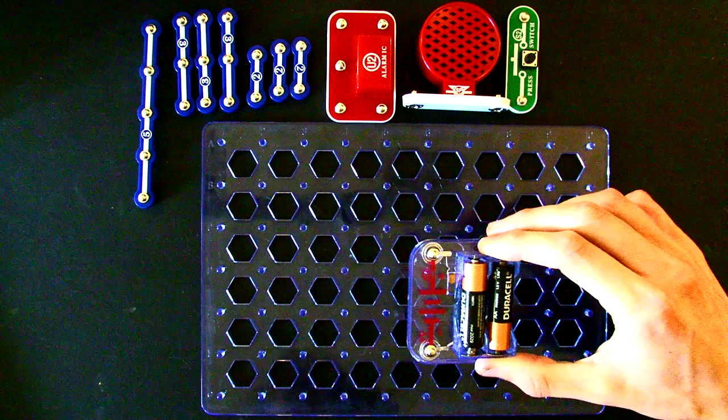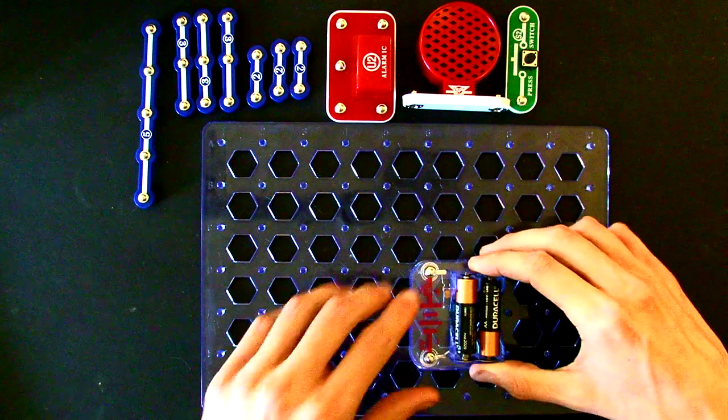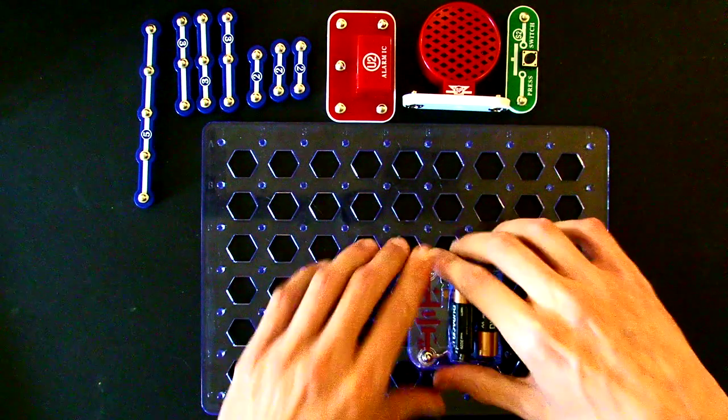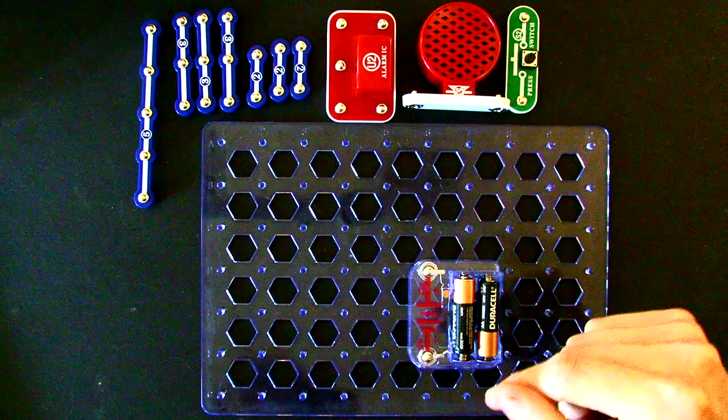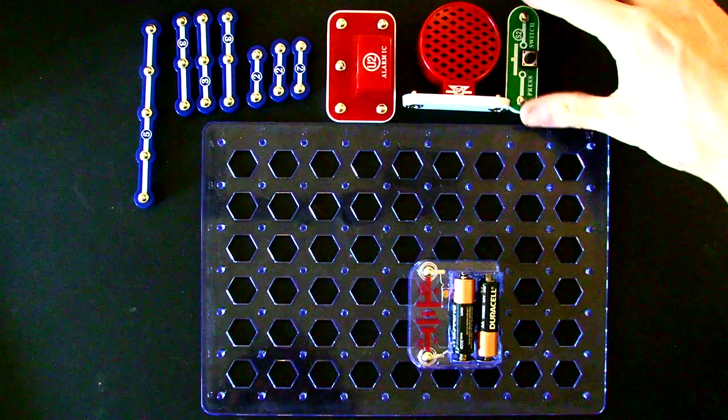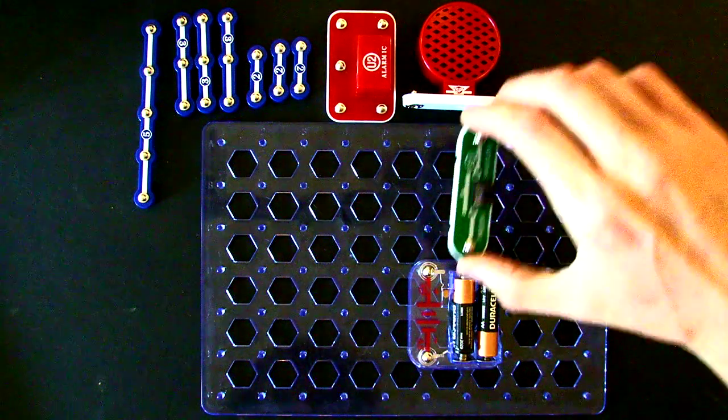First, take your battery holder and attach it to the grid. Next, every circuit we make is going to have a switch so we can turn it on and off. Let's attach our switch now to the positive side of the battery.